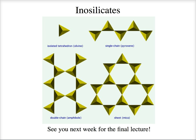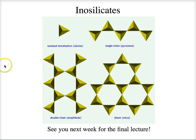That leads us to the end. We've gone from framework silicates — all corners of the tetrahedra shared — to sheet silicates, then today to single and double chains, and next week we're going to isolated tetrahedra: the nesosilicates, where the tetrahedra do not touch each other. Each silicon sees four oxygens and each oxygen only sees one silicon. See you next week for the final lecture — there'll be a quiz as well. Have a great one!